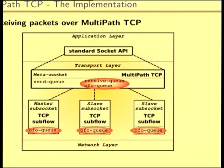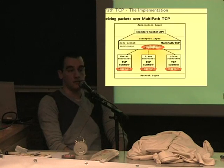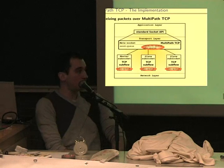We have two queues at the meta socket: the out-of-order queue and the receive queue. The out-of-order queue is used to reorder packets as they come in from the different subflows. The receive queue is accessible by the application, which reads packets out of it.